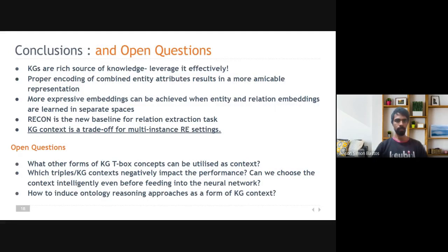So to conclude, we find that KGs are a rich source of knowledge, and utilizing the context information effectively helps learn an amicable representation. More expressive embeddings can be achieved when the entity and relation embeddings are learned in separate spaces, the baseline for the sentential RE task. And on the results obtained, or from the results obtained on the multi-instance dataset, we submit that KG context is a trade-off for the multi-instance RE settings.